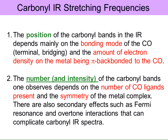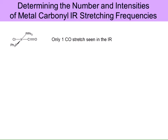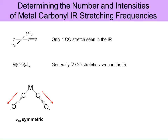For Vaska's salt or Vaska's complex, there's only one CO, so we would expect to see only one CO stretch in the IR. If we have two COs bound to the metal center, we would typically see two CO stretches in the IR — the symmetric and the anti-symmetric (asymmetric) stretch. So there are two ways those COs can stretch.